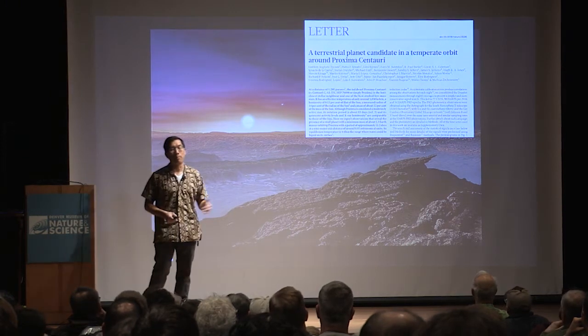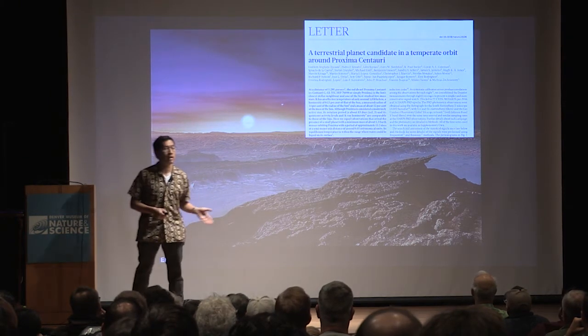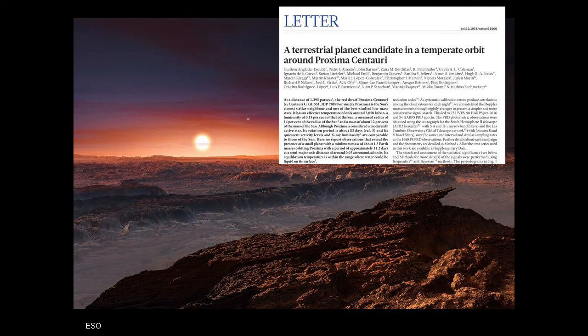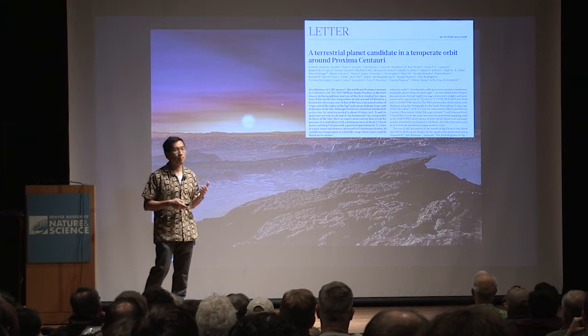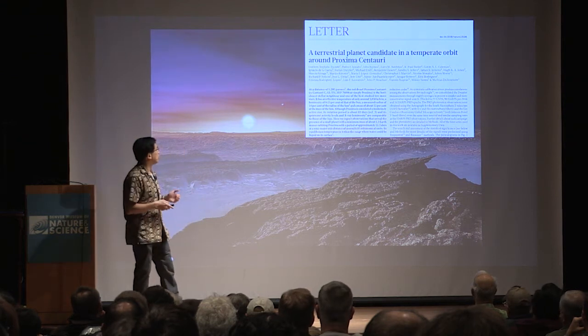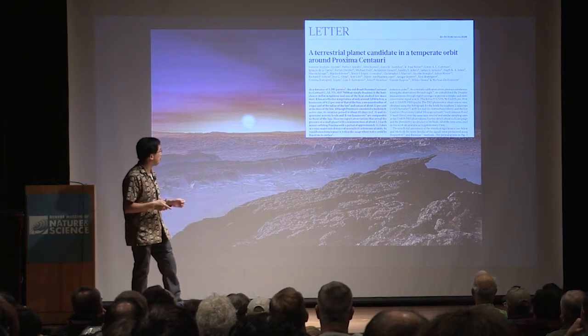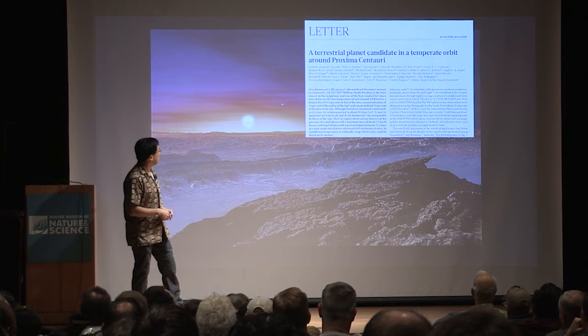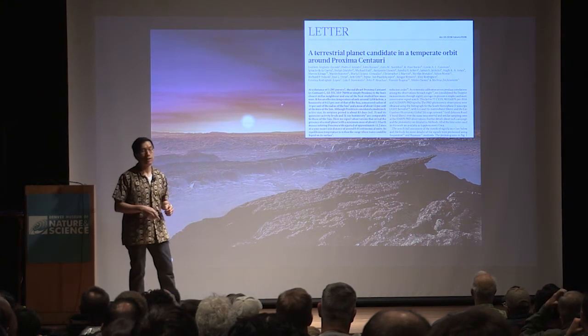And some of you might remember from a couple years ago, there was an announcement that the closest star to our solar system, to our sun, Proxima Centauri, had a planet that was discovered around it. So this is Proxima Centauri b, and this is an artist's conception of what the surface might look like.